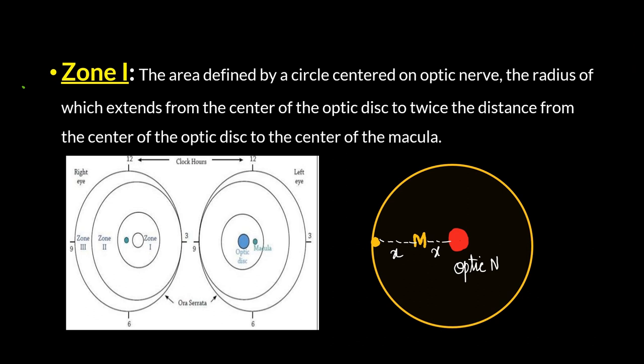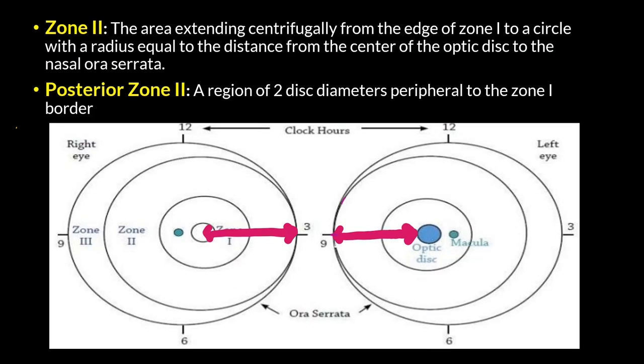First, let us talk about zone 1. Zone 1 is described as a circle centered on the optic disc, where the radius extends from the center of the optic disc to twice the distance from the center of the optic disc to the center of the macula. The red circles shown here represent zone 1, and the radius is double the distance from the optic nerve to the macula.